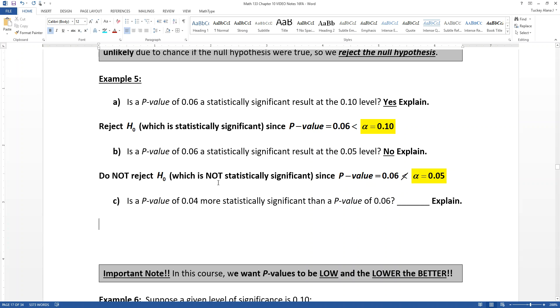Now, is a p-value of 0.04 more statistically significant than a p-value of 0.06? And the answer to that is yes. So here's what you need to know. So you want p-values to be low, lower than alpha, and the lower they are, the better they are. The more you're going to get to reject the null hypothesis.